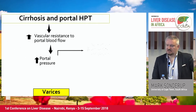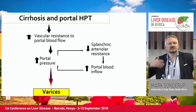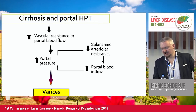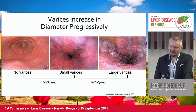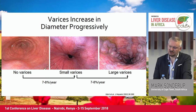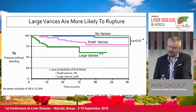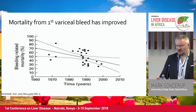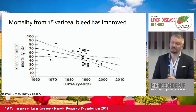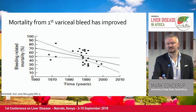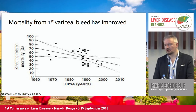Looking at the natural history of portal hypertension: ultimately splanchnic vasodilation worsens portal hypertension, and one potential consequence is the development of varices. Varices have a natural history — they develop small and transition to larger varices at about a 7-8% rate per year, with large varices more likely to rupture. Once you have a variceal bleed, six-week mortality is anywhere up to 15-20% and re-bleeding rate is about 60%. Over the last 40-50 years, worldwide mortality from a first variceal bleed has been declining, probably because management has got much better.